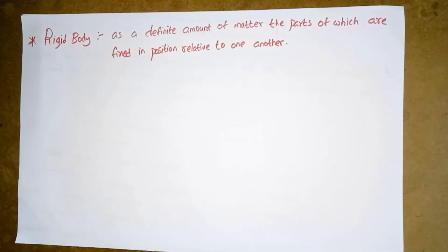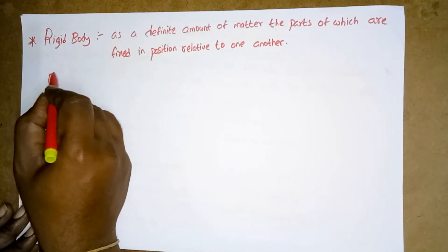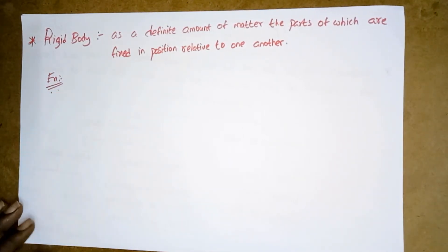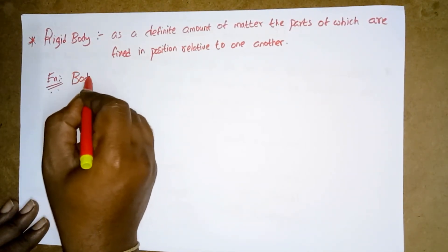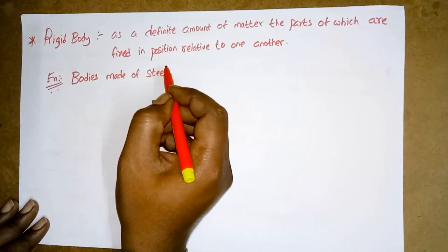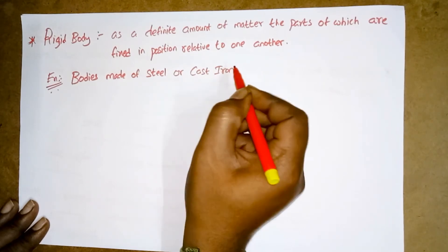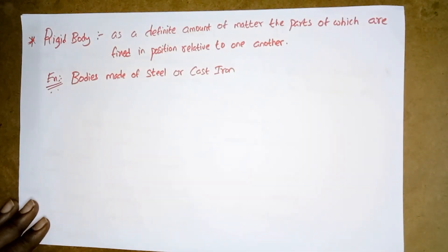Actually, solid bodies are never rigid — they deform under the action of applied forces. In many cases this deformation is negligible compared to the size of the body, and the body may be assumed rigid. For example, bodies made of steel or cast iron are of this type.